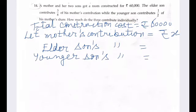a mother and her two sons got a room constructed for Rs 60,000. The elder son contributes 3/8 of his mother's contribution while the younger son contributes half of his mother's share. How much do the three contribute individually?